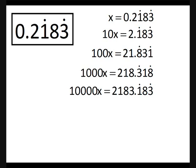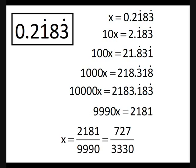Notice that at last, 10x and 10,000x have the same decimal — 183183183. So we subtract, we get 9,990x. And 2,183.183183... take away 2.183183... is 2,181. Dividing 2,181 by 9,990, we get a fraction which cancels down to 727 over 3,330.